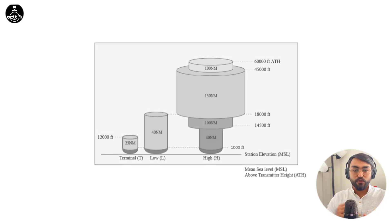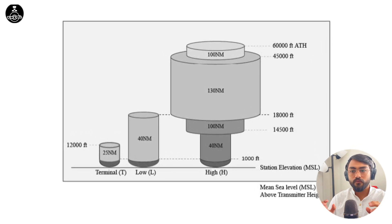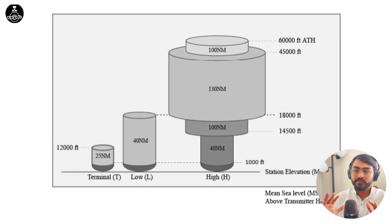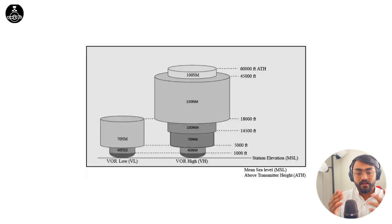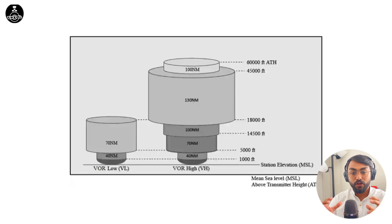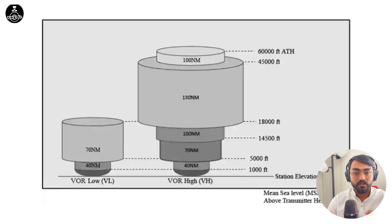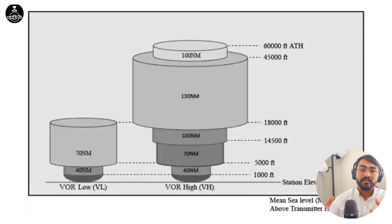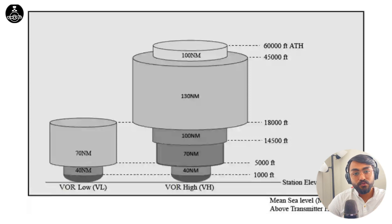When we talked about VOR service volumes in the course, we saw that there are two different categories. There are two ways of classifying them: the older one, which includes Terminal, Low, and High, and the newer ones, which have VOR Low and VOR High. A lot of times when I'm talking to students and instructors, they think that the new service volumes have replaced the previous ones, but that's not the case.